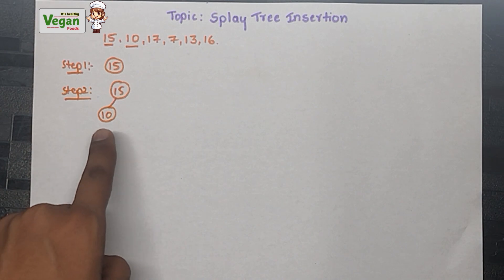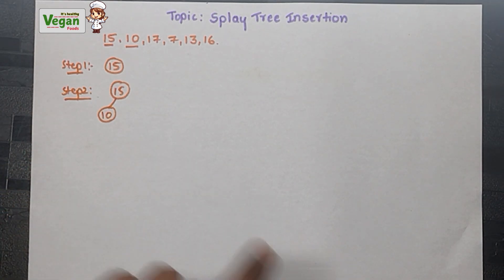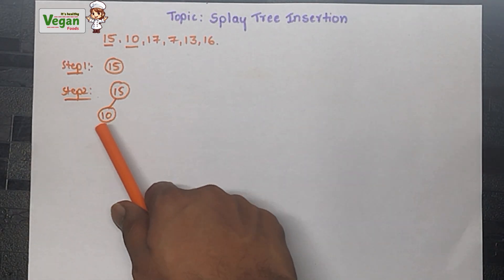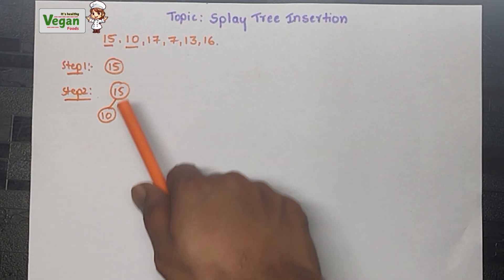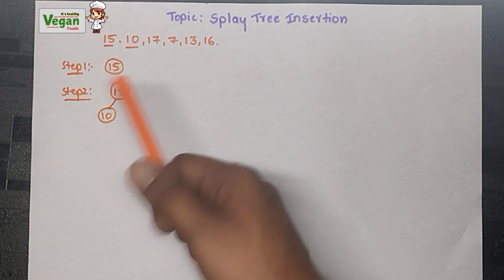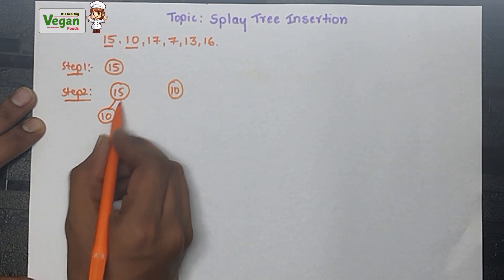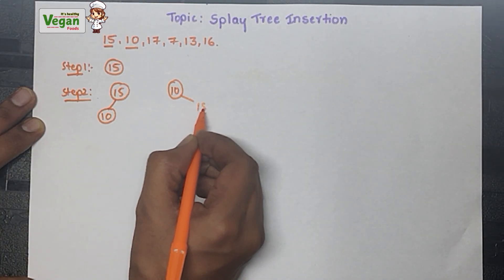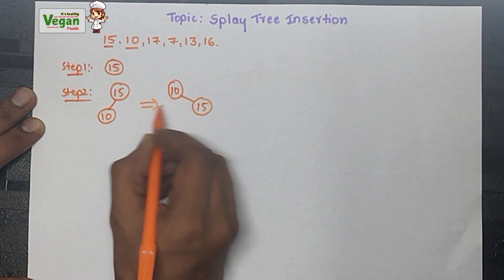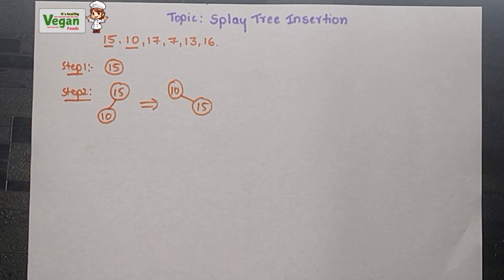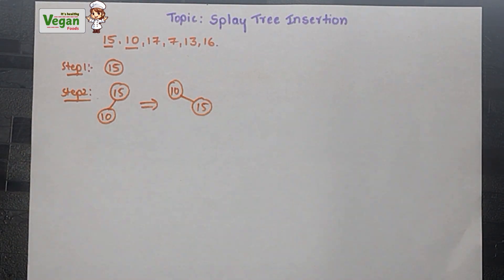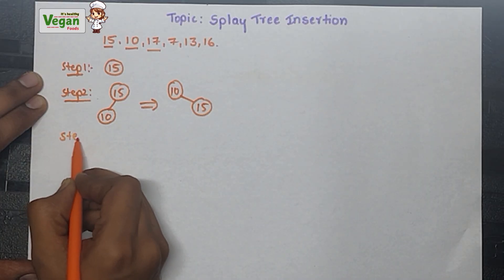In a splay tree, whatever value we are inserting, after inserting we must do the splay operation. What the splay operation does is make the newly inserted element the root value. So just write 10 as the root value. The left out element is 15; 15 is greater than 10, so write it towards the right side. We don't need to remember zig rotation or zag rotation.